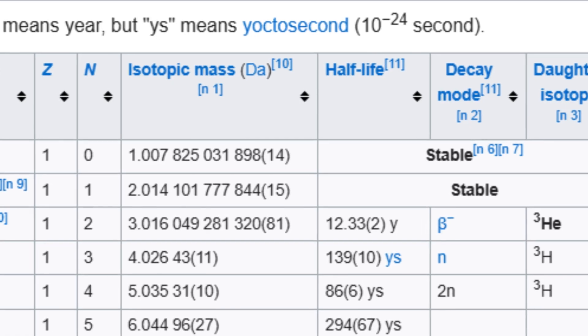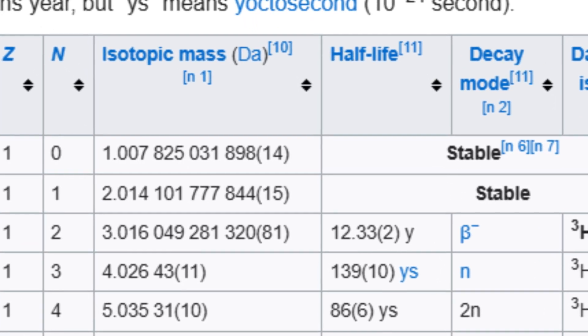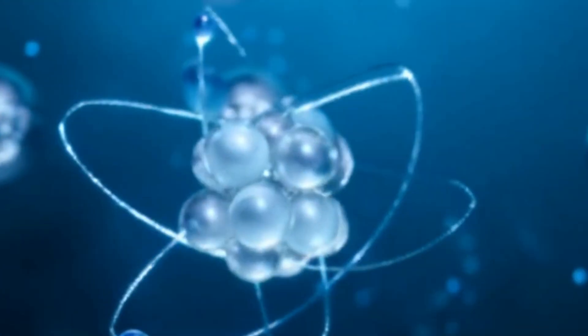Think about that. Five neutrons, one proton, no stable orbit, and yet they clung together, at least briefly, and showed a kind of nuclear behavior that challenges current theories.